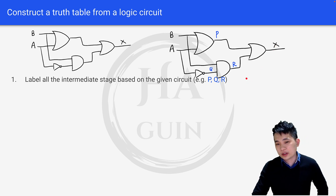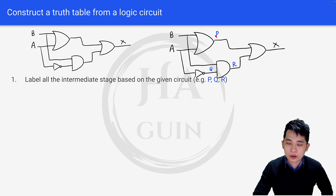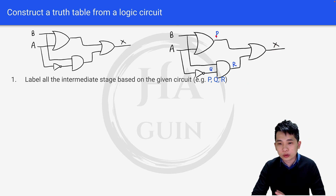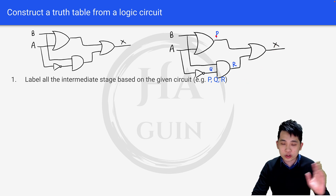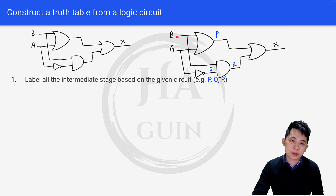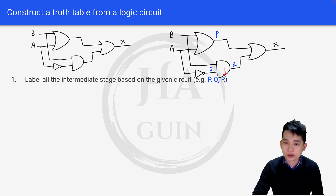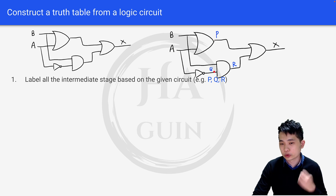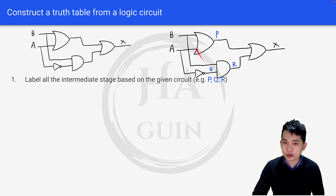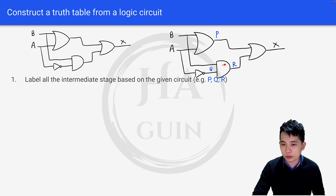Basically, I'm just going to label all the outputs that will change the input. For example, A and B will produce an output P here. Then A going through the NOT gate will produce output Q here. And A and B going through this AND gate will produce output R here.